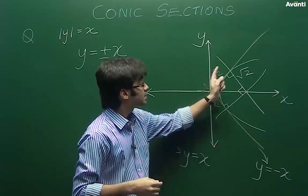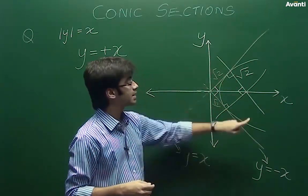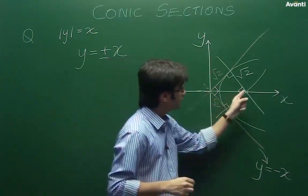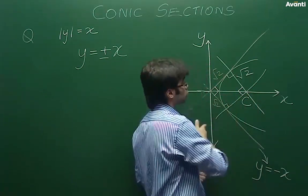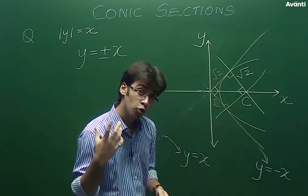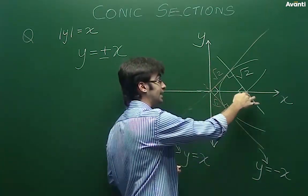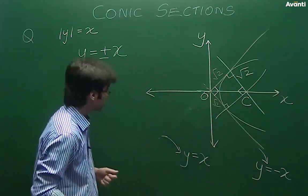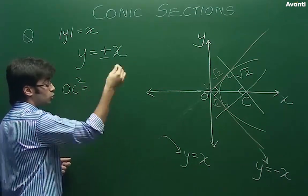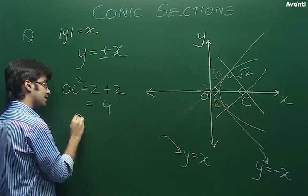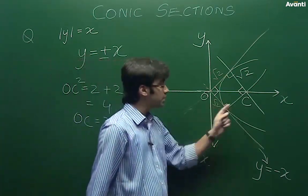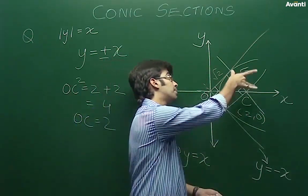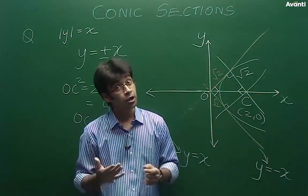अब क्योंकि ये square proof हो गया है और सारे sides की length equal है, तो हम symmetry से कह सकते हैं कि ये point actually x-axis की line पे ही lie करेगा। अब क्योंकि ये point circle का center होना चाहिए, हमें center की coordinates बहुत आसानी से निकाल सकते हैं। ये एक right angle triangle है, इसकी length है root 2, इसकी भी length है root 2। अगर ये origin हो गया, तो OC² = (√2)² + (√2)² = 2 + 2 = 4, जहाँ से OC = 2 units। Center की coordinates हो जाएगी (2, 0) और radius of the circle = root 2।